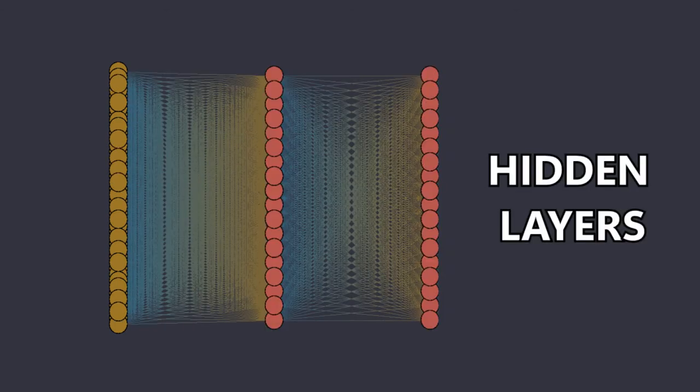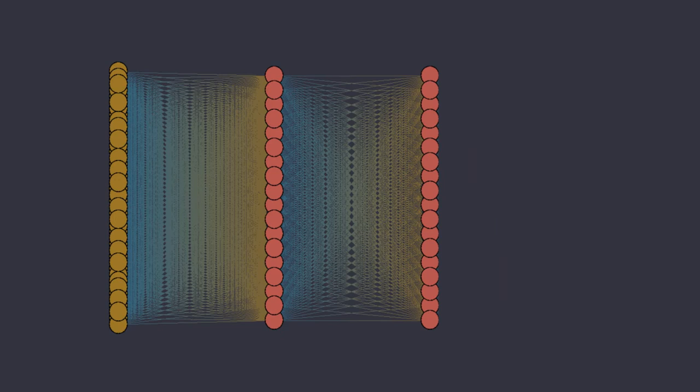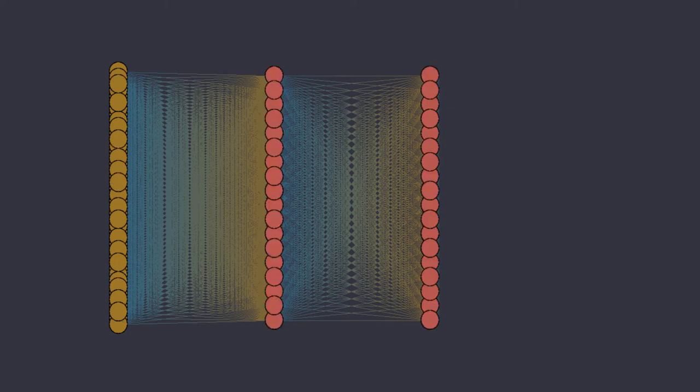After that, there are the hidden layers of the network. They are called hidden because usually you don't know what numbers are inside of them. In this example, there are two hidden layers of 18 nodes each.